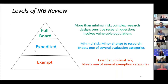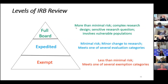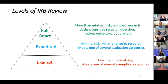Expedited is the next level — that's when minimal risk is presented and maybe we need to do a minor change of the research, and there are several evaluation categories for that as well. Finally, the full board at the very top — that's when the study presents more than minimal risk, has a complex research design, includes sensitive research questions, and potentially involves vulnerable populations like children or prisoners.